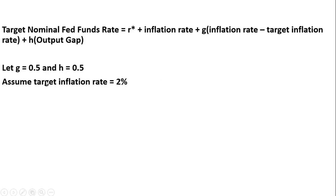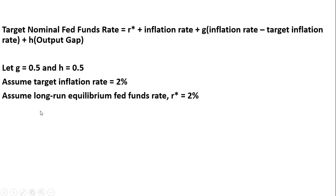Now we're going to make some assumptions. We're going to assume G is 0.5 and H is 0.5. When John Taylor constructed this rule, he found that these parameter values fit the data very well in describing the Federal Reserve's behavior in targeting the nominal Fed funds rate. We'll assume the target inflation rate is 2%, and the long-run equilibrium Fed funds rate R-star is also 2%.